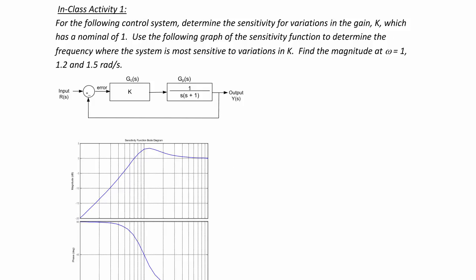In class activity 1: for the following control system, determine the sensitivity for variations in gain k, which has a nominal value of 1. Use the following graph of the sensitivity function to determine the frequency where the system is most sensitive to variations in k. Also find the magnitude at omega equal to 1, 1.2, and 1.5 radians per second.